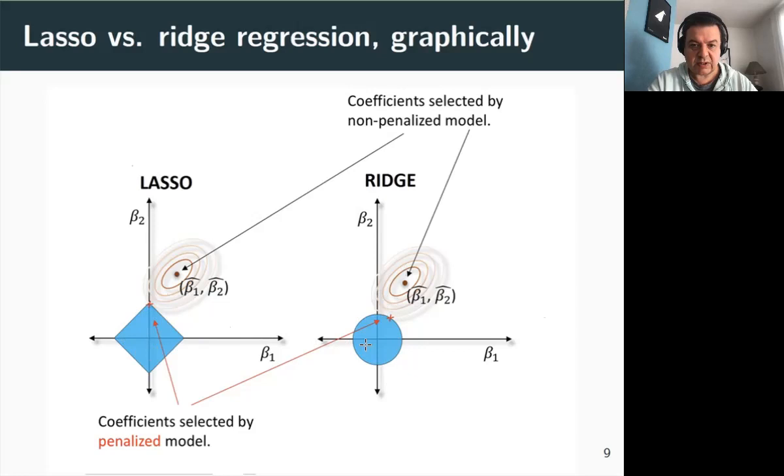Now if we focus on the LASSO, unlike the disk, the diamond has corners. And if the solution occurs at a corner, like it is the case in our example here, one of the betas or several of the betas will be zero. Like in this case, beta one is zero and beta two is this value here. This will rarely happen for ridge regression. And when there are more than two parameters, the diamond has many corners, flat edges and faces, and there are many more opportunities for the estimated parameters to be zero. We use the term sparse for a model with just a few non-zero coefficients. Passing the LASSO provides an automatic way for doing covariate selection, which is kind of neat.